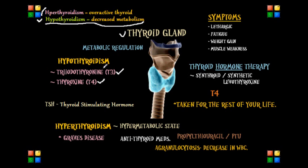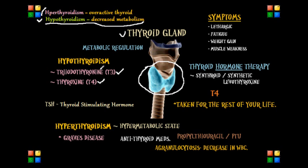Now let's go back and look at the thyroid gland. It is a gland within the endocrine system, and its main function is the regulation of the body's metabolic rate. This is done through the production of specific hormones, which we'll go through shortly, and it's these hormones that stimulate metabolic activity and body heat production.